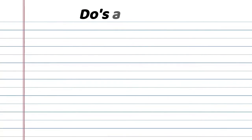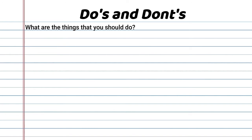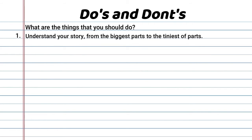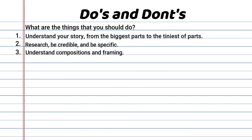But we're not at the end yet, because those are just steps. There are also things that you should and should not do. Let's move this into a graphics section — just a heads up that there's quite a lot, but they're easy to understand. Number one: understand your story from the biggest parts to the tiniest of parts. Number two: research, be credible, and be specific.